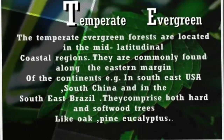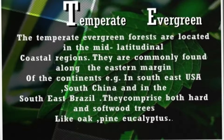Next is the temperate evergreen forest. The forest which we observe in the temperate zone is known as a temperate evergreen forest. Temperate evergreen forests are located in the mid-latitudinal coastal regions — this is especially the temperate zone. The examples are the Southeast USA, South China, and Southeast Brazil. They comprise both hard and softwood trees like oak and pine. These are the examples of temperate evergreen forest, and the specialty is that they comprise both hard and softwood trees.